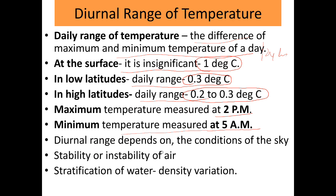The diurnal range depends on the conditions of the sky — if the sky is cloudy, temperature cannot penetrate the clouds much, which affects the diurnal range. Stability of air also matters: if the air is stable, the temperature loss from the ocean surface is less; if unstable, the ocean water loses a lot of heat to the blowing wind. Stratification of water due to density variation also causes the water to separate into different layers.